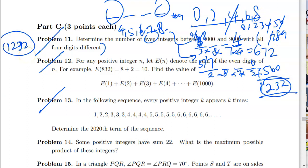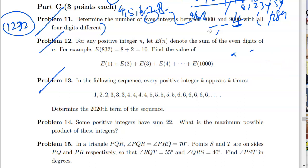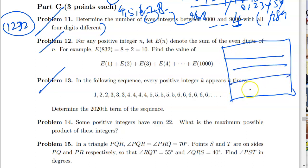Now for problem 12: for any positive integer n, let the function e(n) denote the sum of the even digits of n. For example, e(832) = 8 + 2 = 10. Find the value of e(1) + e(2) + ... + e(1000). You do not need to find every specific e(1), e(2), ..., e(1000) individually.